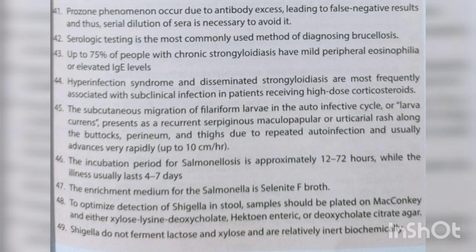Up to 75% of people with chronic strongyloidiasis have mild peripheral eosinophilia or elevated IgE levels. Hyperinfection syndrome and disseminated strongyloides are most frequently associated with subclinical infection in patients receiving high-dose corticosteroids. Subcutaneous migration of filariform larvae in the auto-infective cycle presents as a recurrent serpiginous maculopapular or urticarial rash along the buttocks, perineum, and thigh, usually advancing very rapidly.